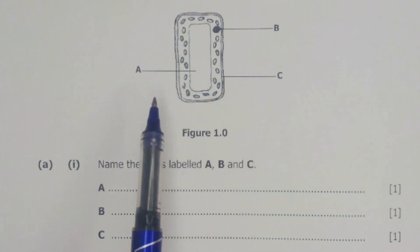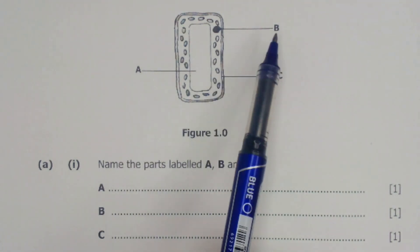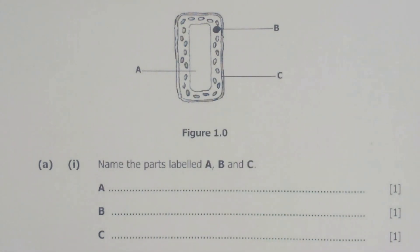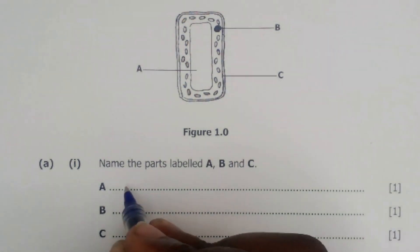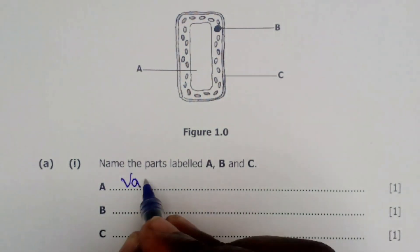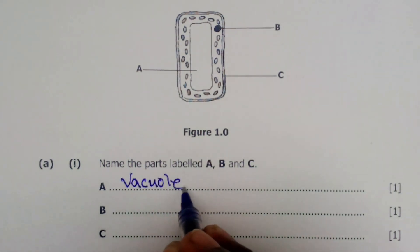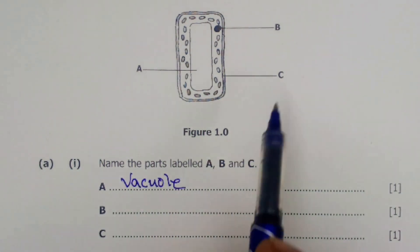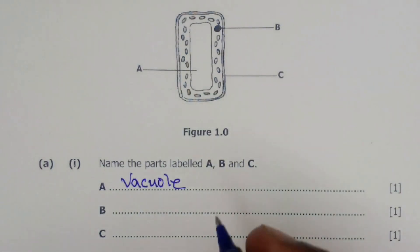We are supposed to identify parts A, B, and C. Part A is simply the vacuole. And for part B, which is shaded, this is actually the nucleus.